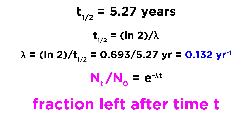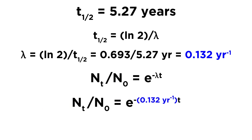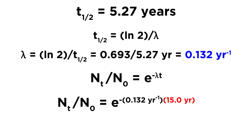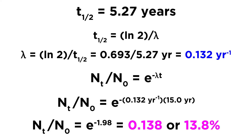Let's plug in what we know. We plug in our decay constant and t equals 15.0 years, since that's what the question asked. Doing the arithmetic, that equals e to the negative 1.98, which equals 0.138 — or 13.8% expressed as a percentage. So after 15 years, which is just a little bit under three half-lives, we will have 13.8% of the radioactive nuclei remaining.